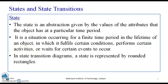The state is an abstraction given by the values of the attributes that the object has at a particular period of time. It is a situation occurring for a finite time period in the lifetime of an object, in which it fulfills certain conditions, performs certain activities, or waits for certain events to occur. In a state transition diagram, a state is represented by a rounded rectangle.